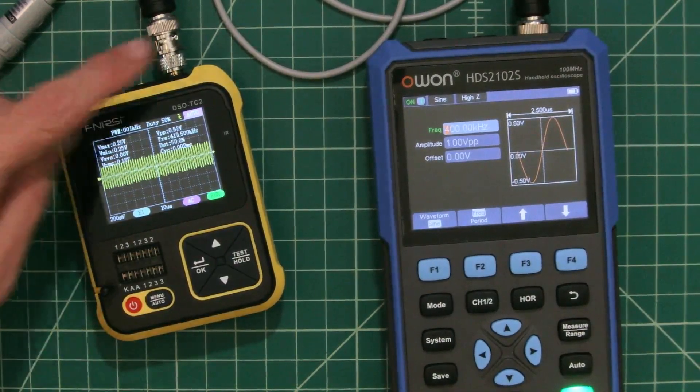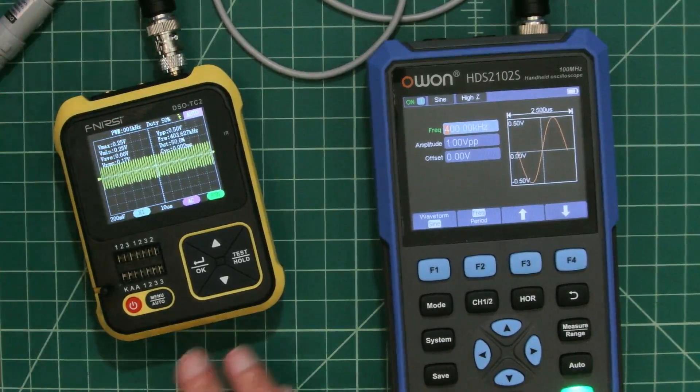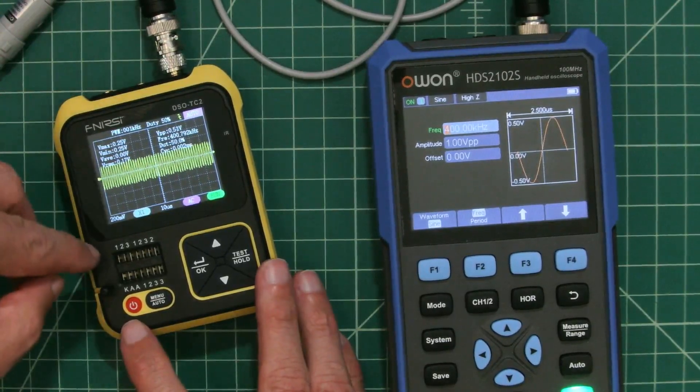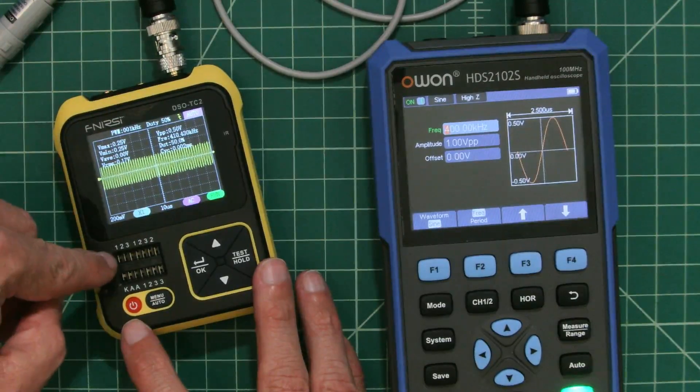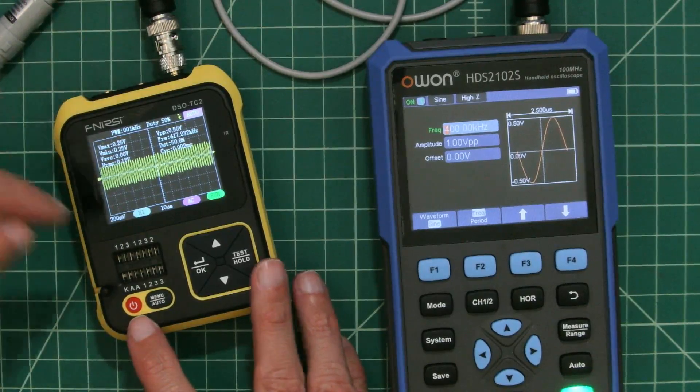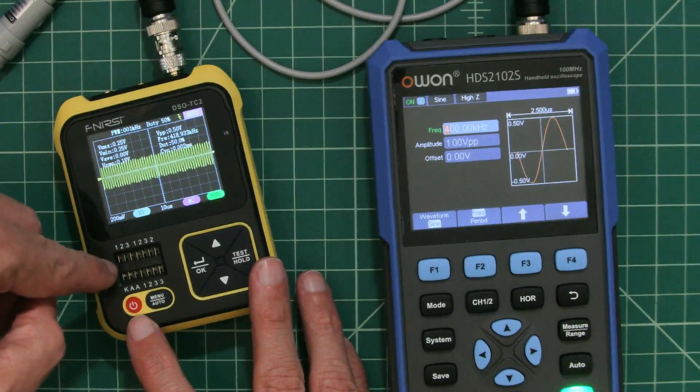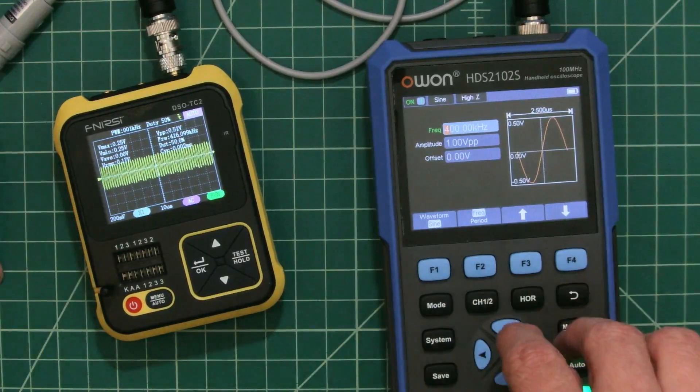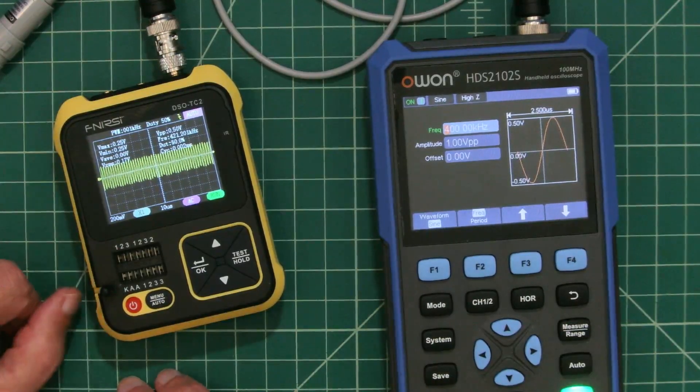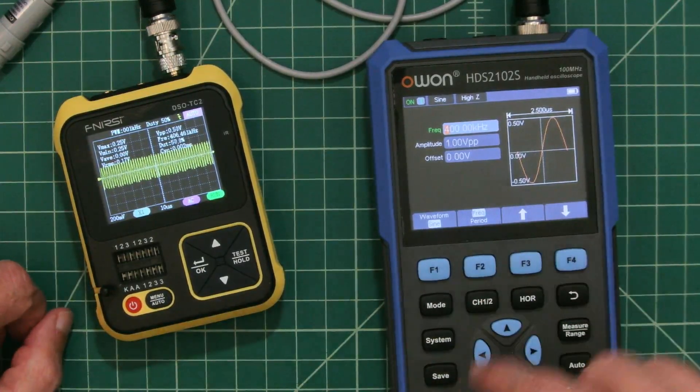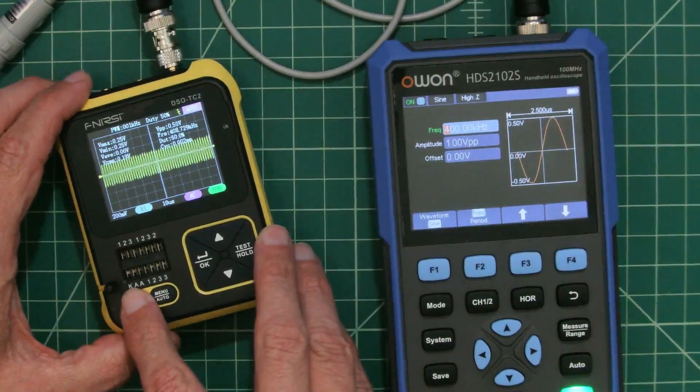It looks like you have this nice little functional oscilloscope that you can play around with. To me, the interesting part of this device is actually going to be this component tester. I'm typically not a big fan of these component testers when they're connected to things like a multimeter, but in this case, this looks pretty intriguing. So let's power this stuff off and come back and take a look at that.